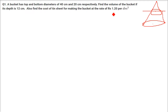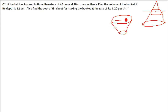So a bucket has top and bottom diameters given. The top and bottom diameters are given — these are circles. The diameter at the top is 40, so the radius will be 20. The diameter at the bottom is 20, so the radius will be 10.